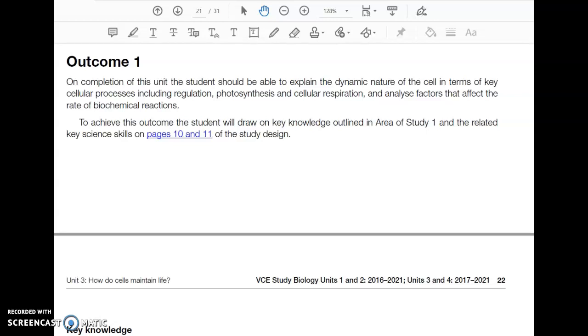All right, VCE Biology Students Unit 3 and 4. Let's start going through the key knowledge, starting with Outcome 1. So on completion of this unit, the student should be able to explain the dynamic nature of cells in terms of key cellular processes, including regulation, photosynthesis, and cellular respiration, and analyze factors that affect the rate of biochemical reactions.